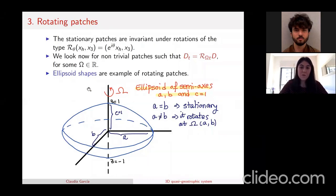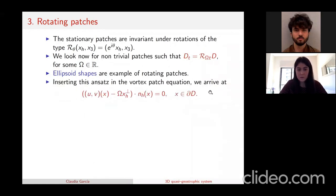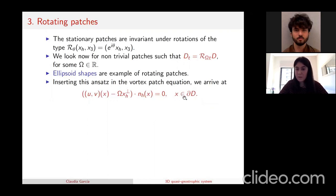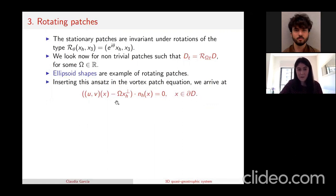We have some examples of this class of solutions and would like to find more. Going back to the vortex patch equation and inserting this rotating evolution, we get an equation: u, v (the velocity field's first two components) minus omega times the perpendicular of the horizontal variables (x₁, x₂) dotted with the horizontal normal vector must be zero for any point on the boundary. To find a non-trivial solution, we must find an initial domain D and an angular velocity omega such that this equation is satisfied everywhere on the boundary.